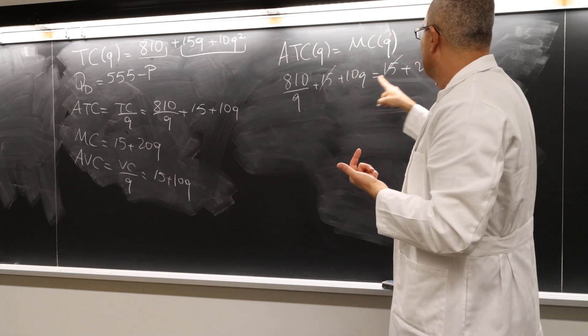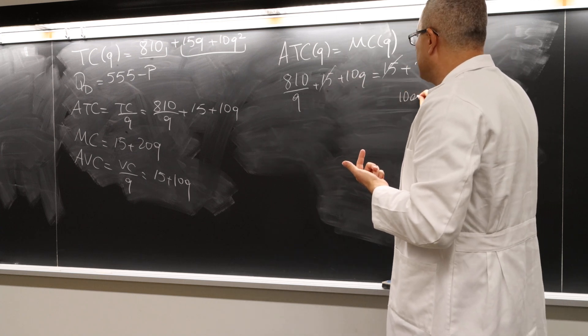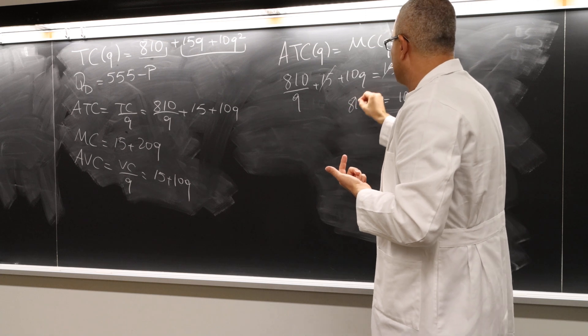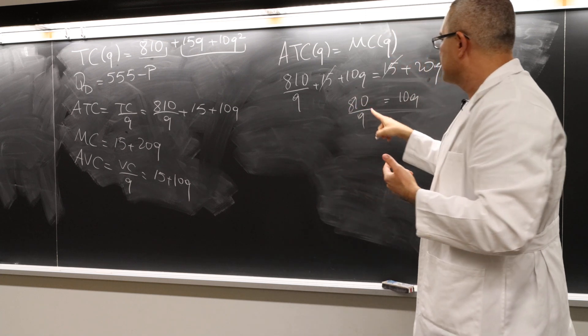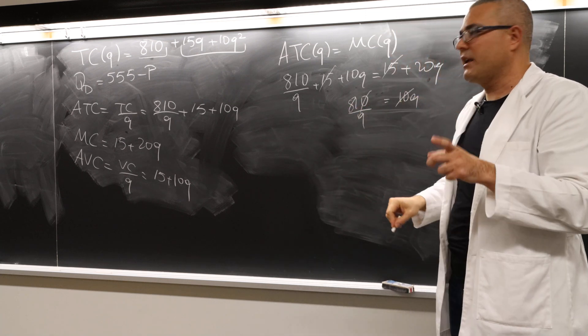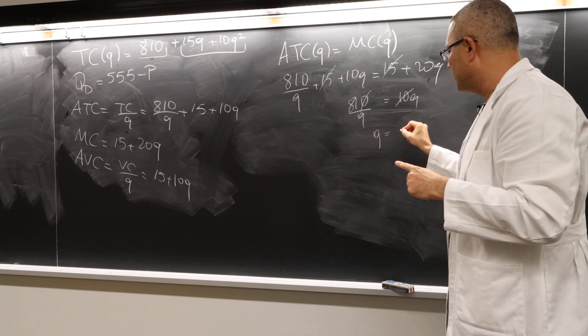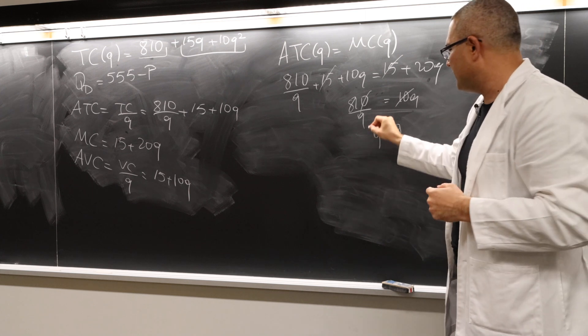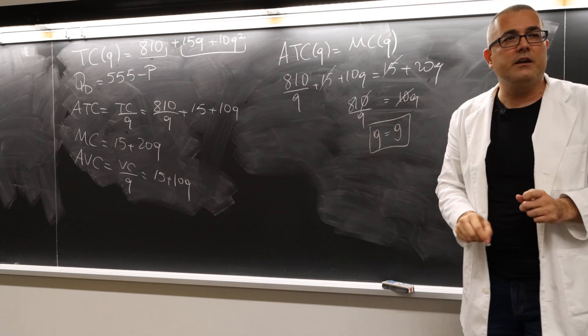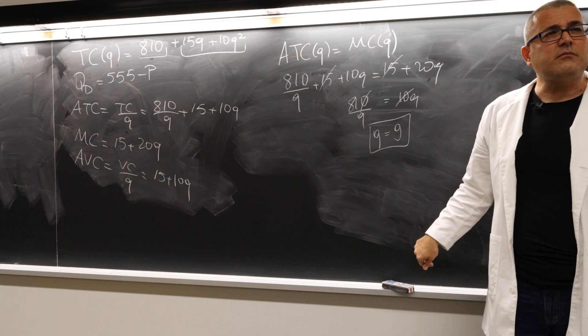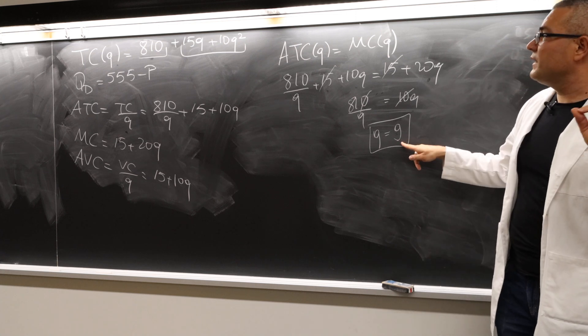Marginal cost is 15 plus 20q. So let's solve it. 15s cancel out. I have 10q here, 810 over q. So 10 and 10 will cancel out. Q squared equals 81. So q is 9.